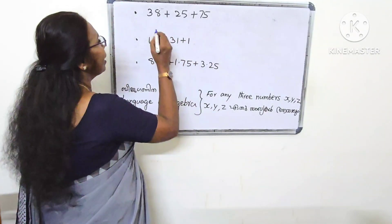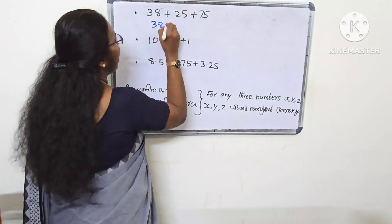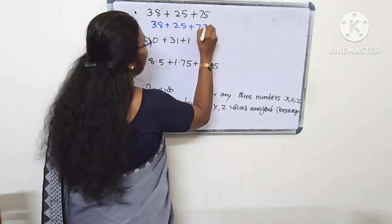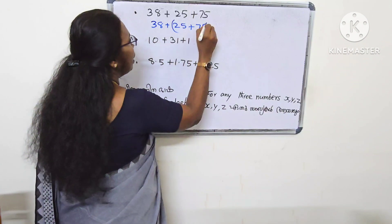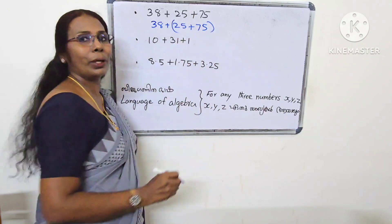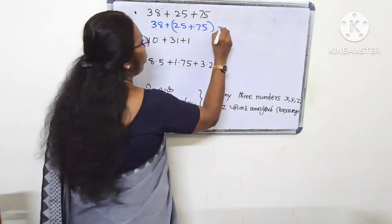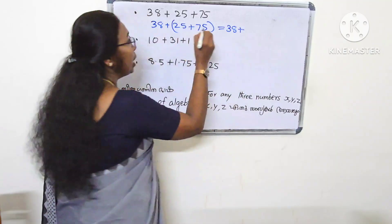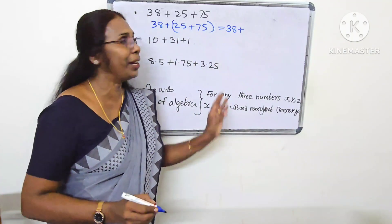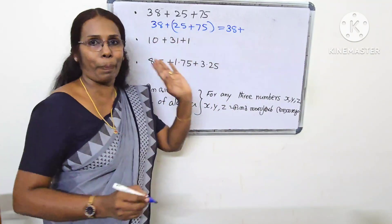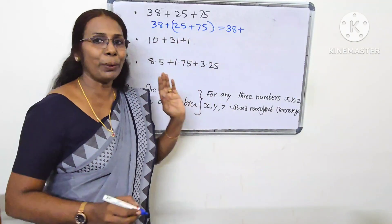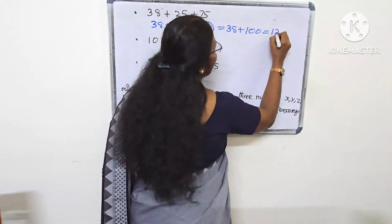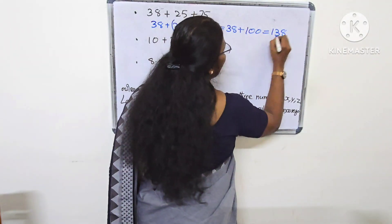What do we do? 38 plus 25 plus 75. Now, we can add two numbers here. Let's take a look: 38 plus 25 plus 75. What do we do? 25 plus 5 plus 30. 30 plus 70 plus 3 is 100. Now, we can add one thing. How do we do that?